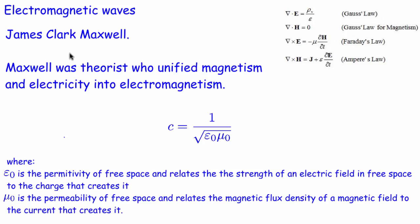James Clark Maxwell was a Scottish physicist who worked on electricity and magnetism and basically unified the two into electromagnetism. He came up with four equations which are collectively known as Maxwell's equations.